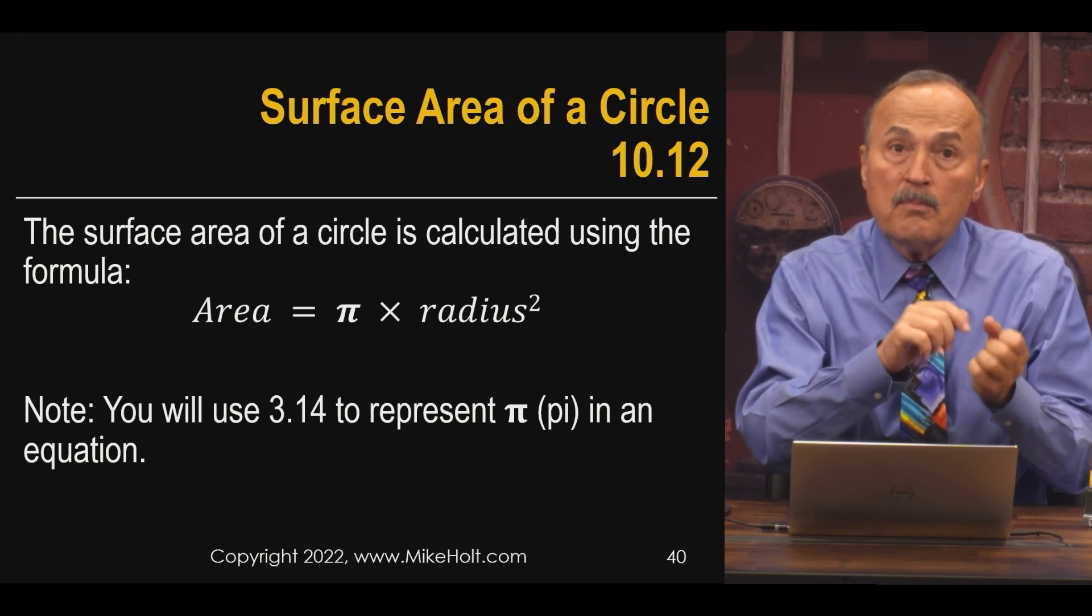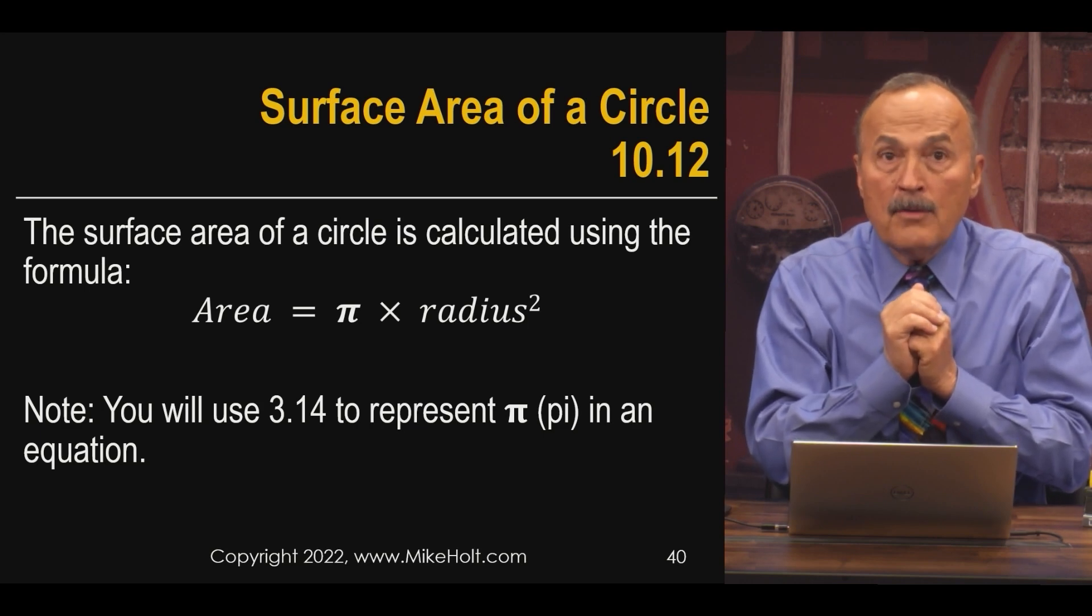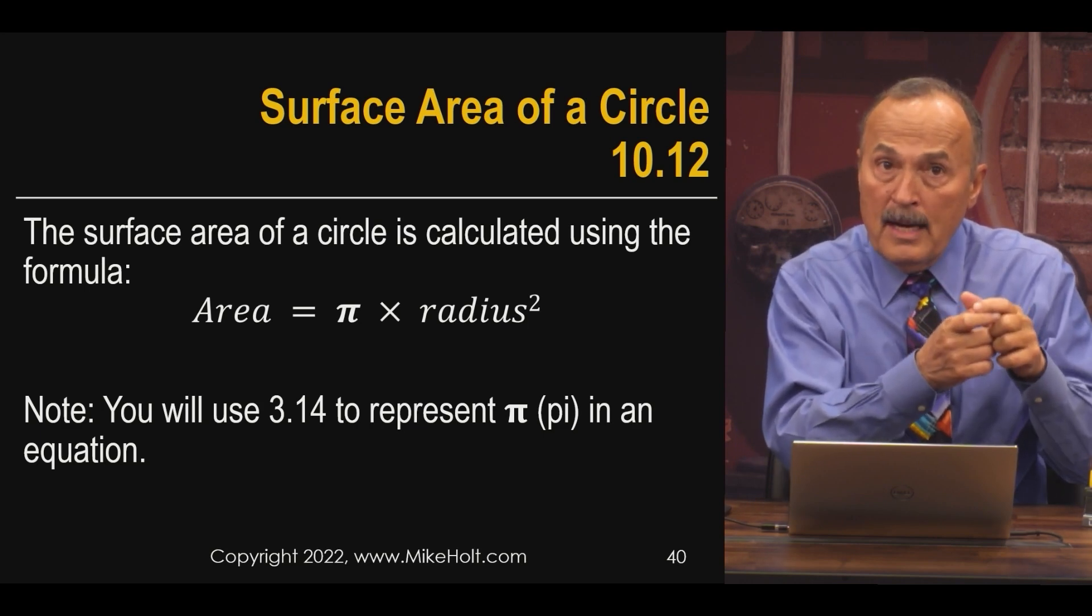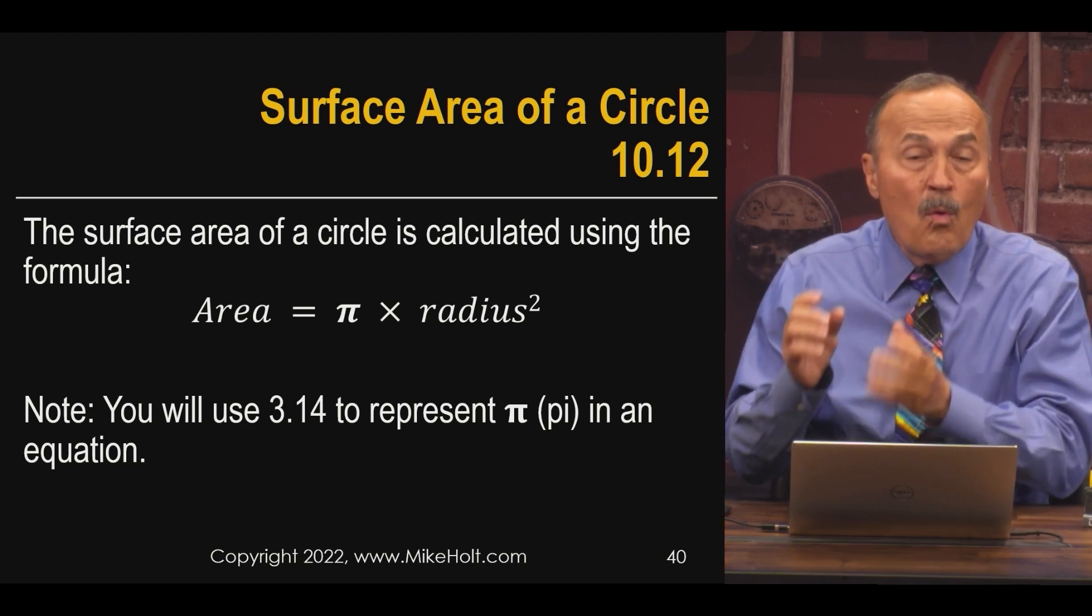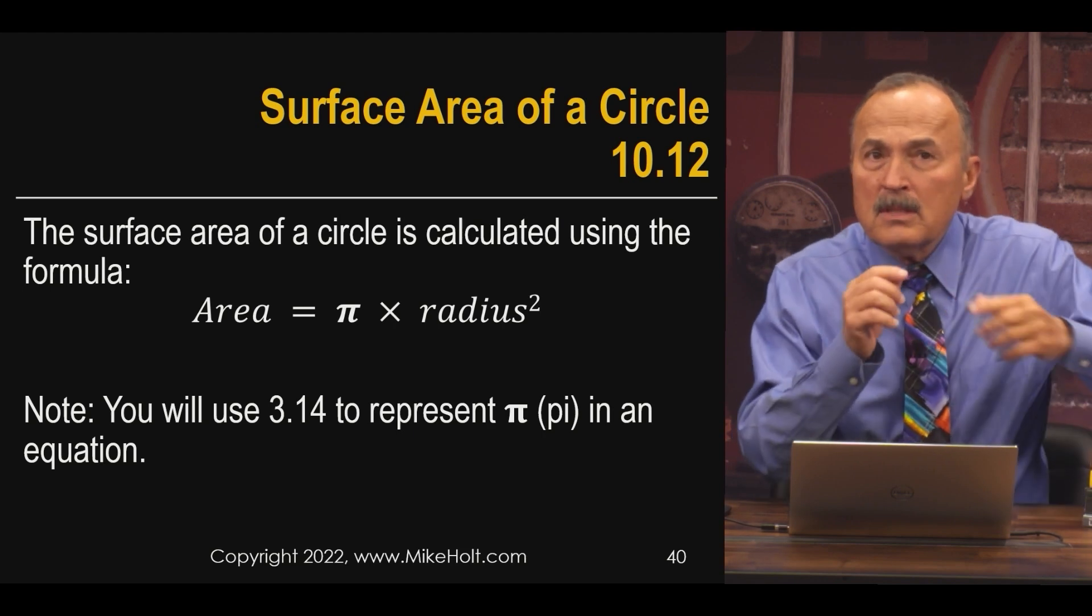The code tells you you can only fill it up to a certain percentage fill. The code book will actually give you the area of a circle for the pipe and the area of the wires, so you don't have to calculate the area of circles.